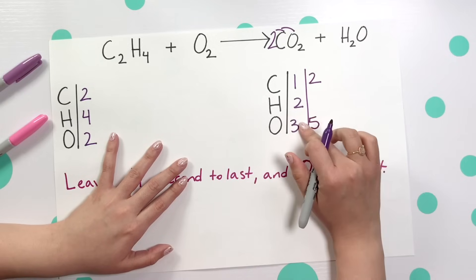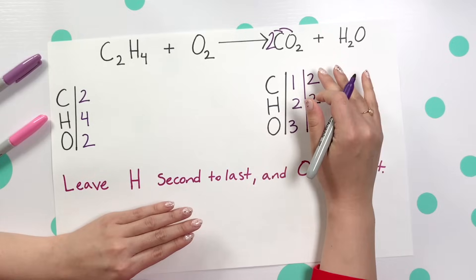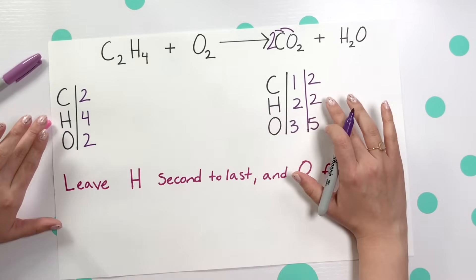So we now have five oxygen on our product side and nothing happened with hydrogen so that stayed the exact same. Now let's go back to our reactant side and then we'll balance out our hydrogen.